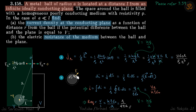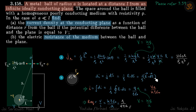We take a small elemental surface dS on the sphere. The current through it is dI = J·dS = (E/rho)·dS. Since E and dS are parallel to each other, we can write it as (1/rho) times the integral of E·dS. We integrate to find the total current.